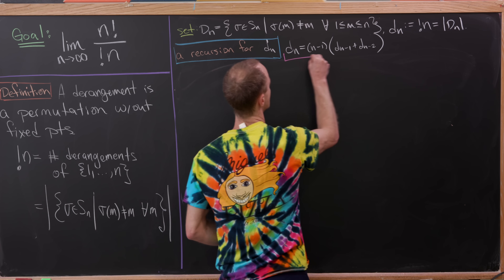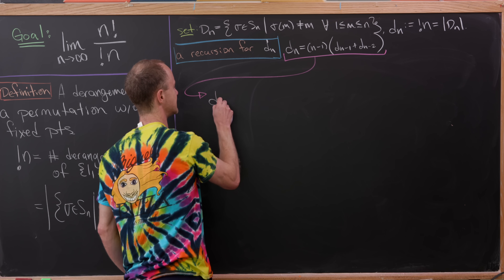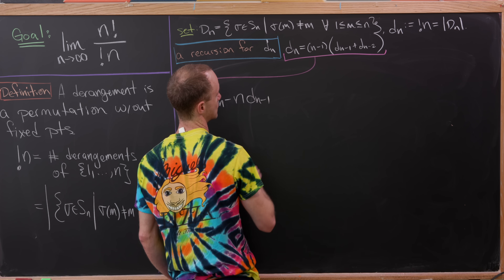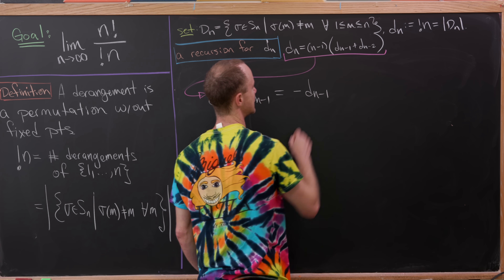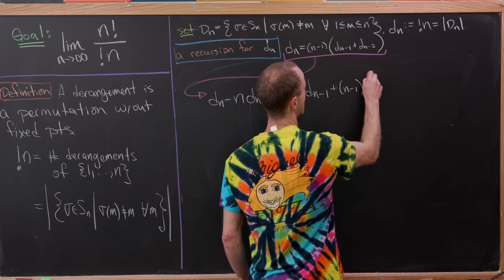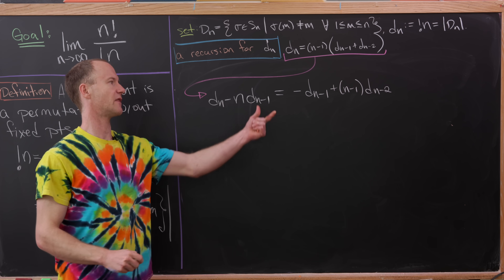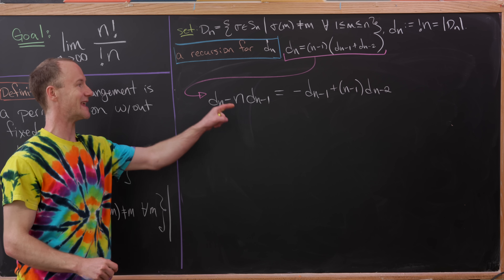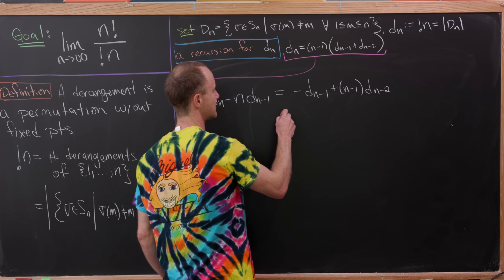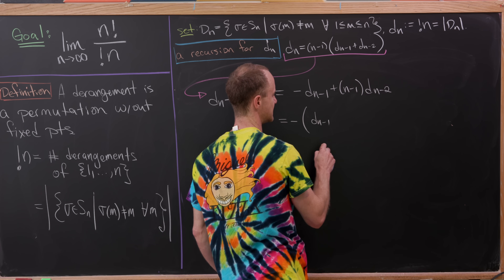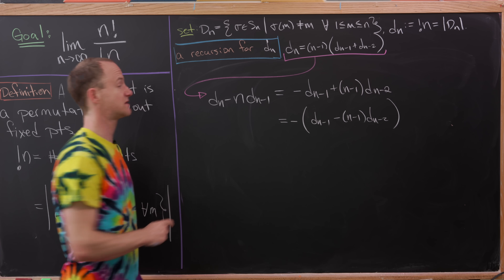Starting with this recursion, let's do a calculation. Consider d_n − n·d_{n−1}. That equals −d_{n−1} + (n−1)·d_{n−2}. Observe that the left-hand and right-hand sides look very similar — the index on the right has been lowered by 1 and a minus sign has been introduced. Factoring out a minus sign gives us −(d_{n−1} − (n−1)·d_{n−2}).